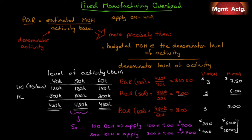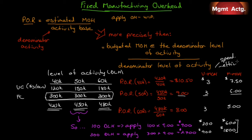We apply different amounts of fixed overhead depending on hours used, but we don't expect our actual fixed costs to change. We hope to use 50,000 hours so that everything is fully applied — $300,000 in fixed costs and $150,000 in variable. Fixed costs should stay the same regardless of direct labor hours, and this distinction matters when we break down the two types of variances for fixed manufacturing overhead.